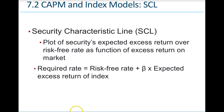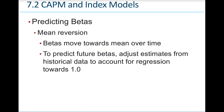The security characteristics line plots a security's expected excess returns over the risk-free rate as a function of the excess returns of the market. The required rate is the CAPM formula: the risk-free rate plus beta times the expected excess return for the index. As for predicting betas, betas move toward the mean over time, so when predicting future betas we must adjust estimates from historical data to account for regression toward one.